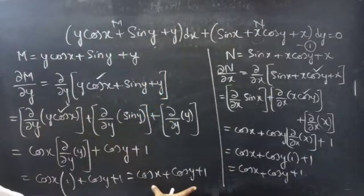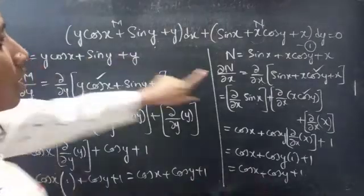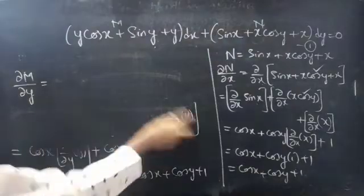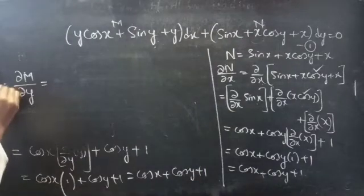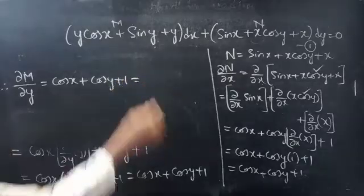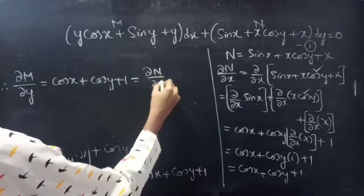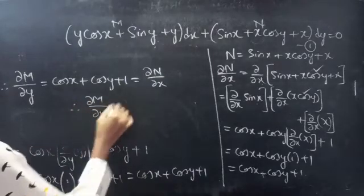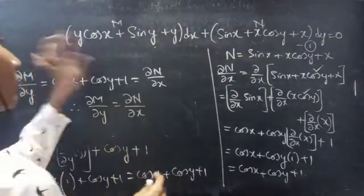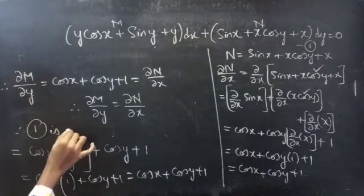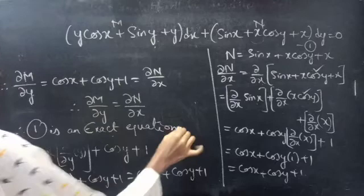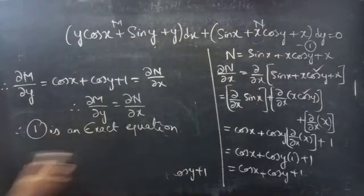Therefore, ∂M/∂y equals cos x plus cos y plus 1, which equals ∂N/∂x. Since ∂M/∂y equals ∂N/∂x, the given differential equation is exact. Therefore, equation 1 is an exact equation. Since it is exact, we can find the general solution.